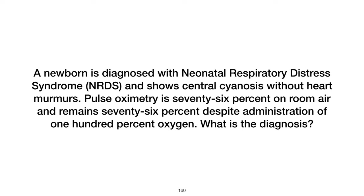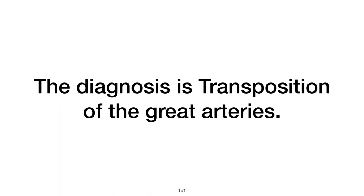In neonatal respiratory distress syndrome (NRDS) with central cyanosis, no heart murmurs, and a pulse oximetry reading of 76% on room air that does not improve with 100% oxygen, what is the diagnosis? The diagnosis would likely be transposition of the great arteries, given the described symptoms and the lack of improvement with oxygen administration.